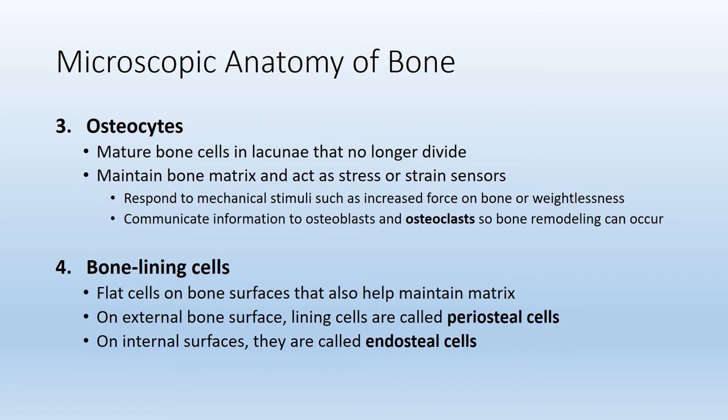The next type of cell found in osseous tissue is known as an osteocyte. The term 'cyte' means a mature cell that is there to maintain the health of the matrix. After an osteoblast has secreted so much osteoid, it eventually traps itself inside this hardened shell. Once officially trapped within the osteoid, it changes its name to an osteocyte and is there to maintain the surrounding matrix.